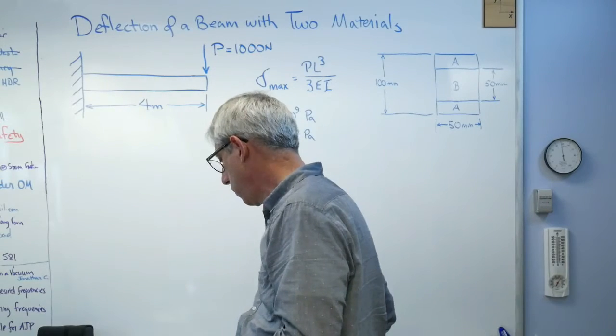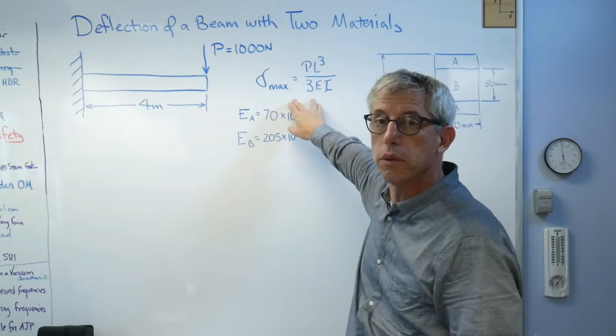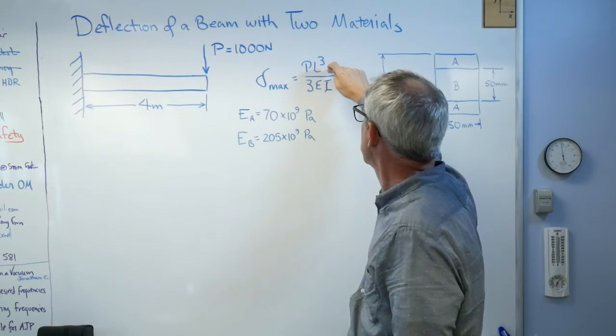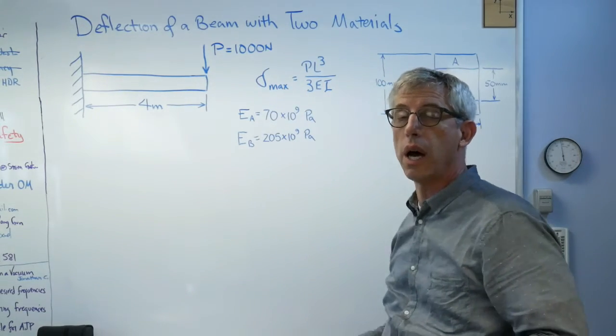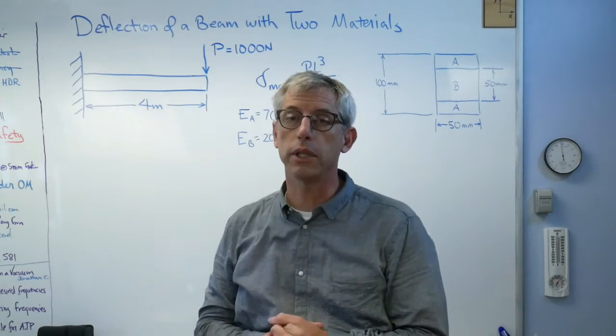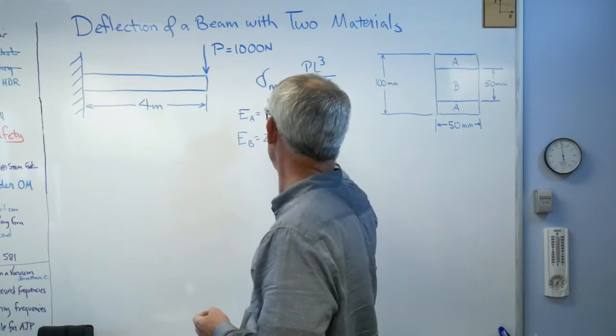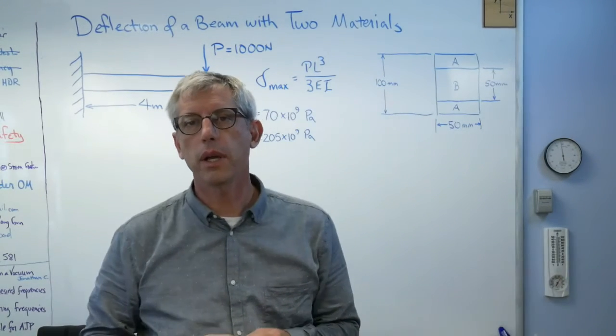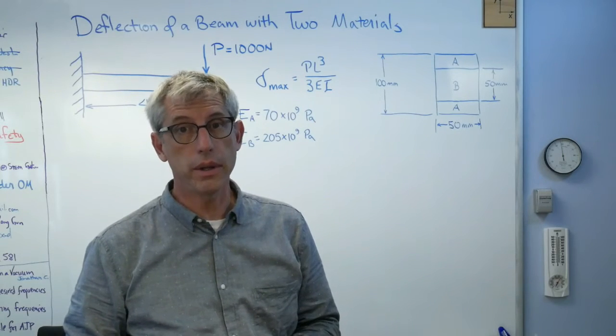And if we have one material that's the expression PL cubed over 3EI where P is the load at the end, length is L, 3 is just a number, E is the elastic modulus and I is the area moment of inertia. It's easy enough if it's one material, but there's an awful lot of cases where it's more than one material. This happens absolutely all the time.